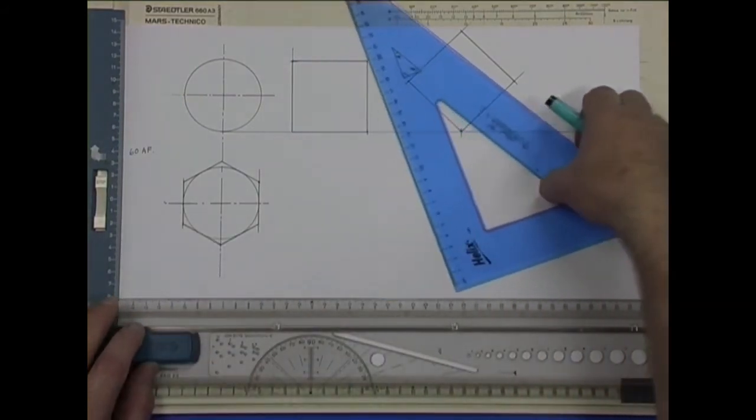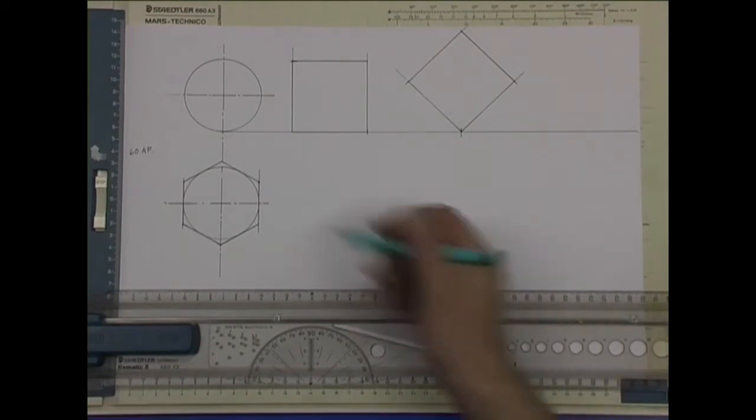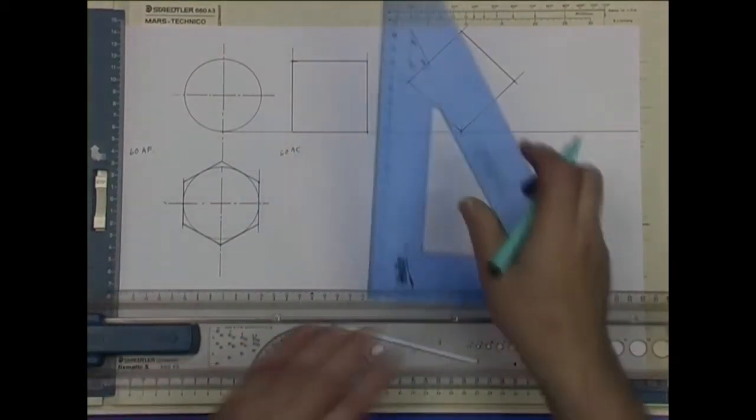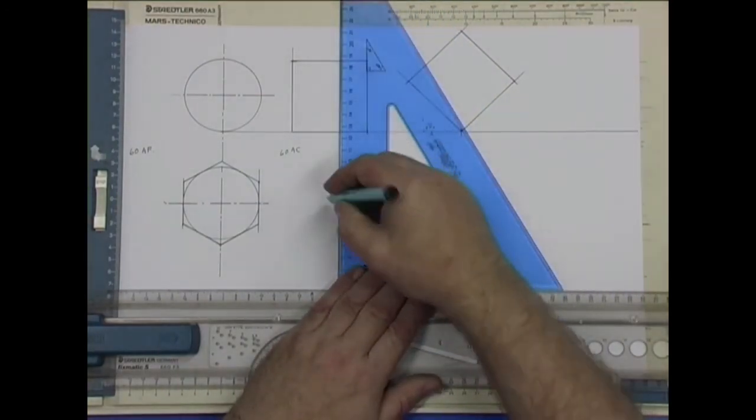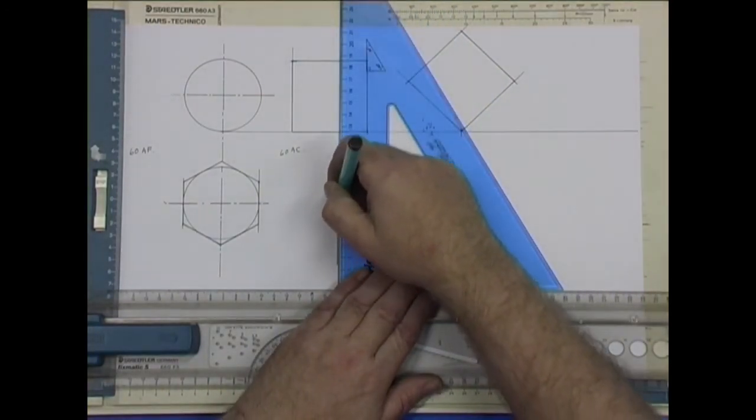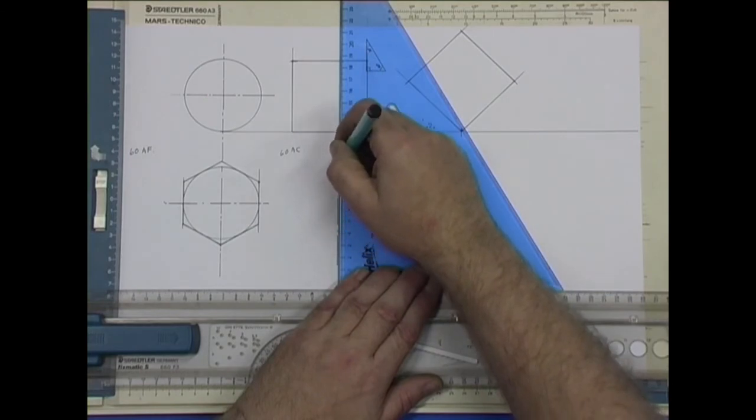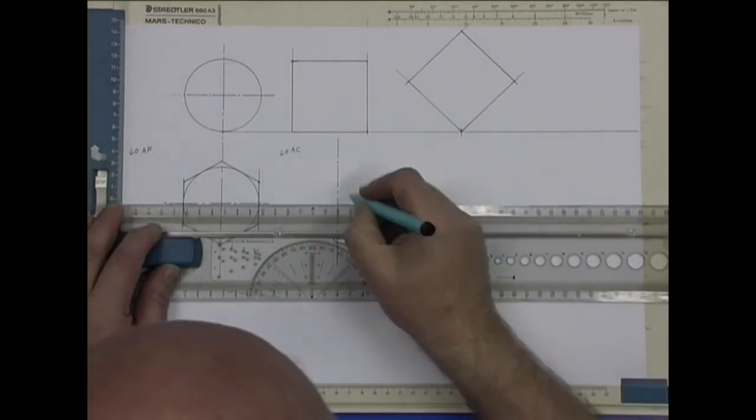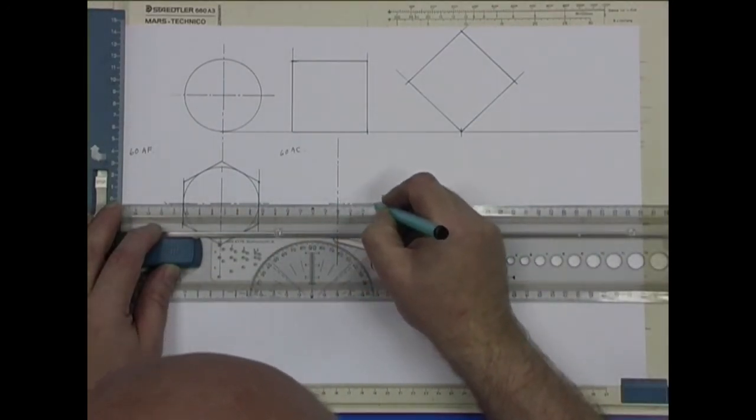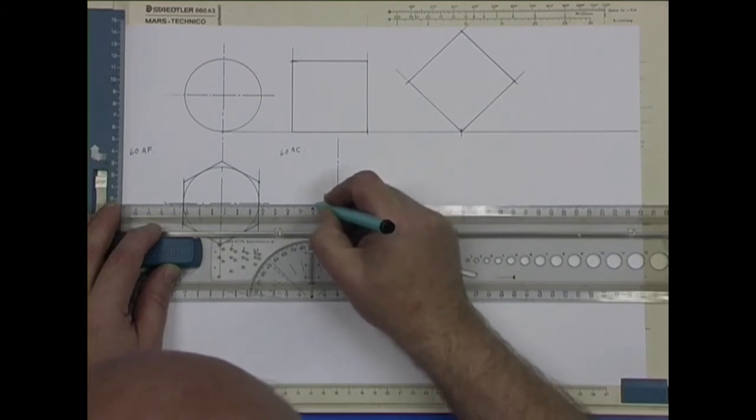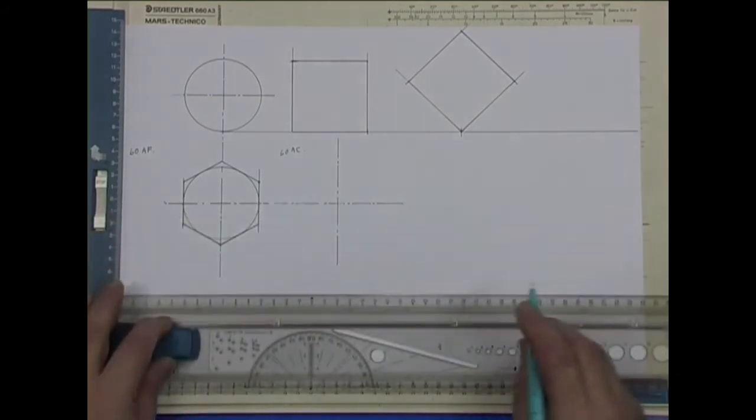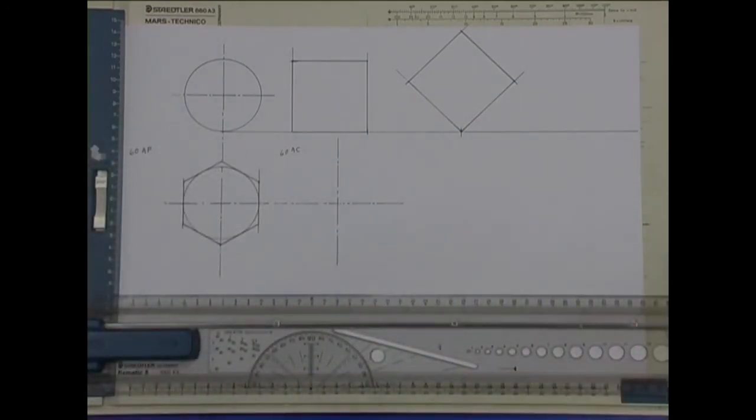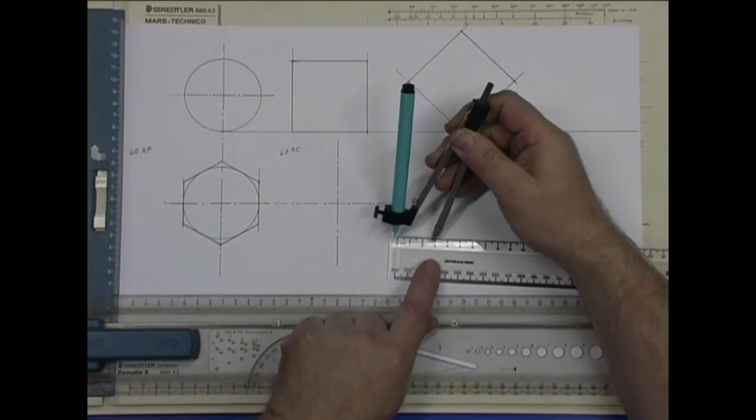And now go over how to draw 60 across the corners. It's done in a very similar way. The center lines. Compass, it should still be set at 30, but we'll check in case it's moved. I'm going to lay it down.